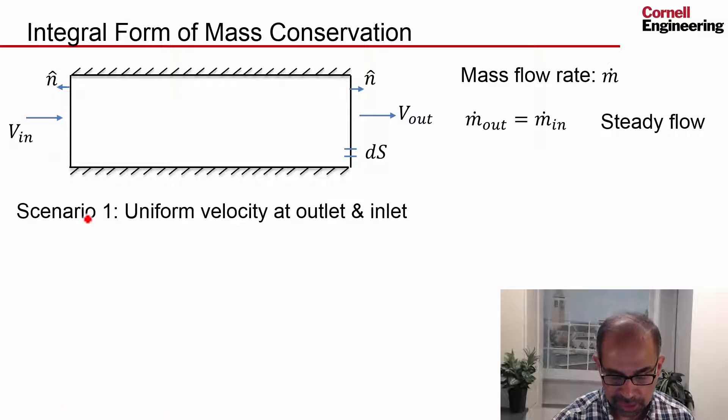And then, so the mass flow rate going out will be equal to density times the velocity at the outlet, the uniform velocity, times the area of that outlet which is going to be this length times some unit distance perpendicular to the screen. So I'll say S_out.